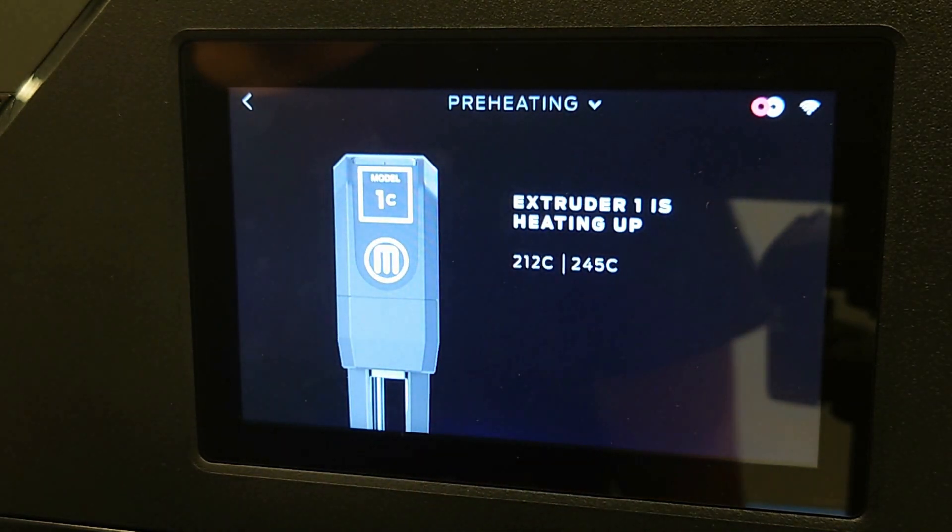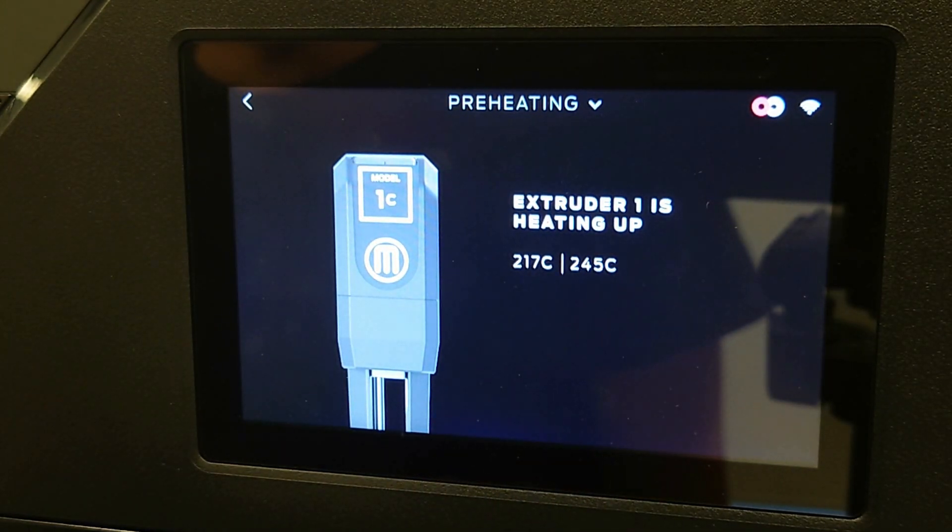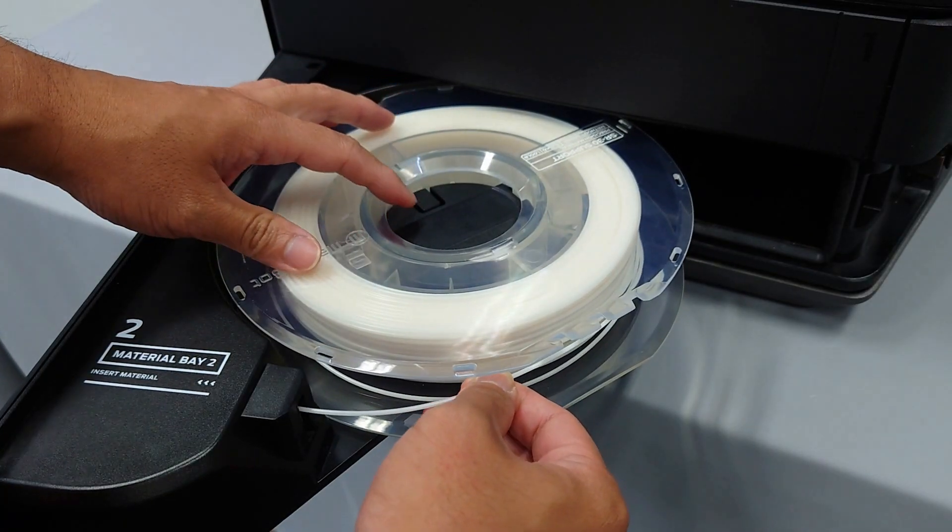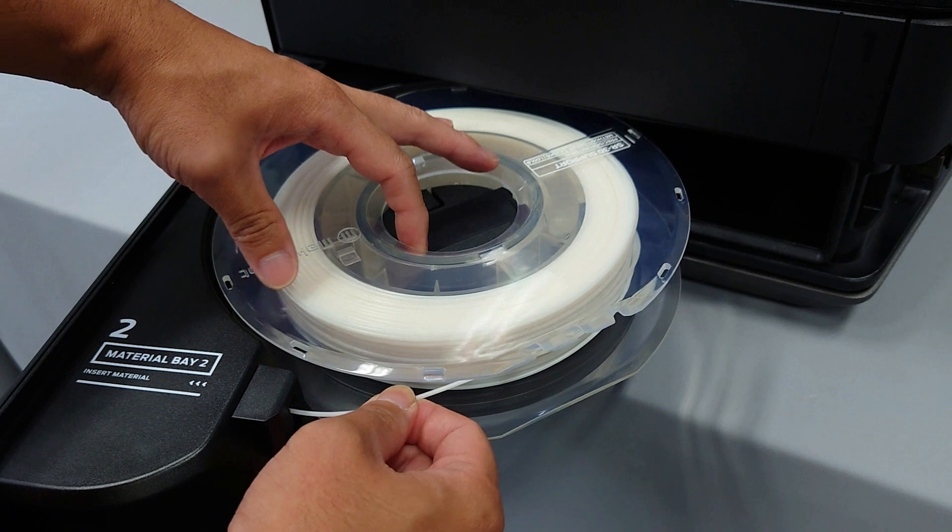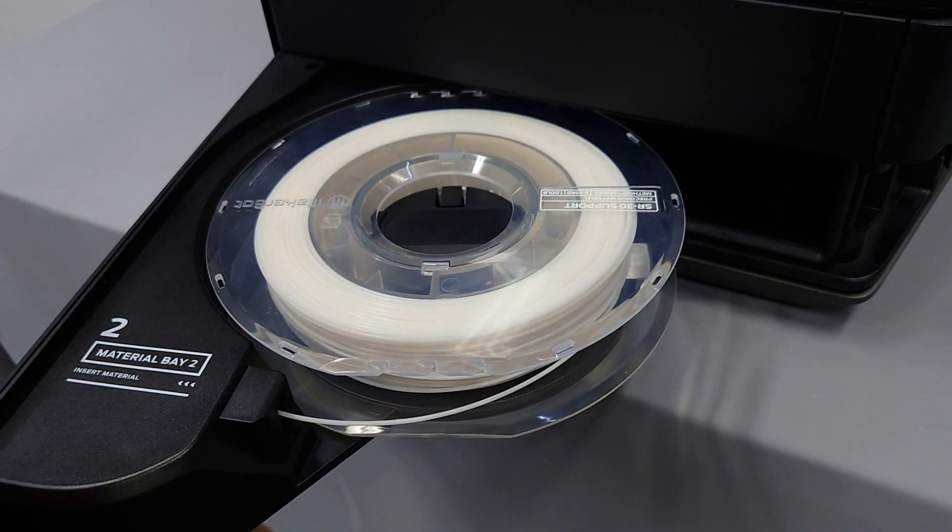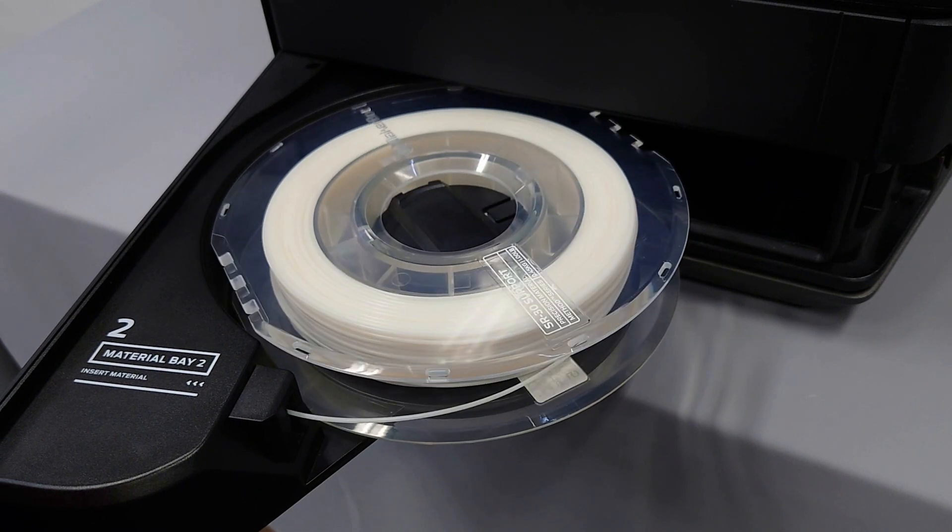Once the extruders are heated, the interface will instruct you to load material. Guide the end of the material into the loading port. You should feel a catch on the internal motor, at which point you can allow method to do the rest of the work.